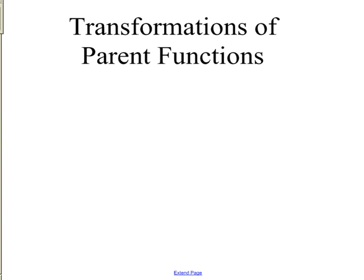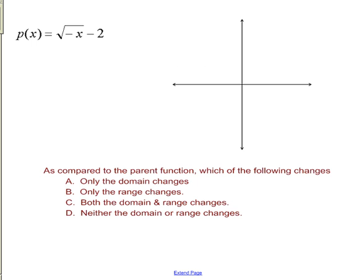In this video we're going to practice transformations of parent functions, focusing mostly on e to the x and ln of x because those are tricky. We'll start with one that's a little easier. Step one: identify your parent function. In this case it's square root of x — that graph is our swimmer's arm. If you don't have these parent functions memorized, you need to do flashcards. You have to know what they all look like before you can do transformations.